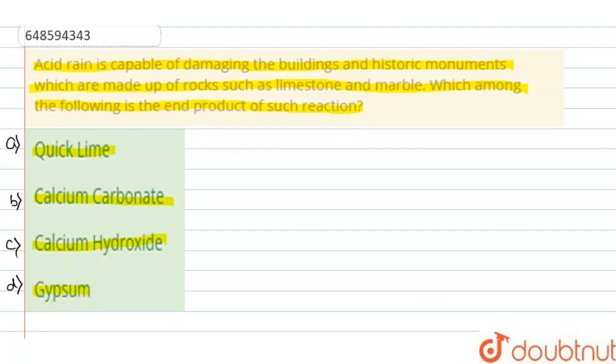So, here the question is asking about acid rain, which damages historic monuments and buildings which are made of limestone and marble like rocks. When it reacts, then the acid rain with the limestone or marble rock will react to give the end product.